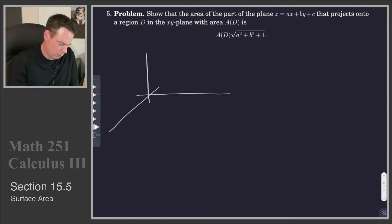I'm saying we've got some region in the plane down below, that's our region called D, and we know the area of that, that's A(D).